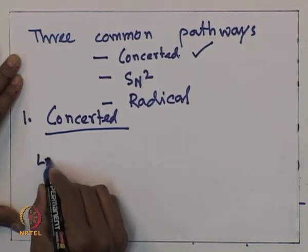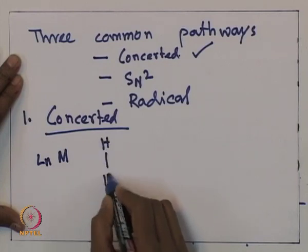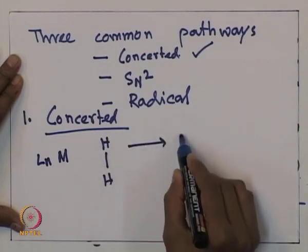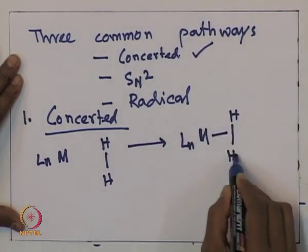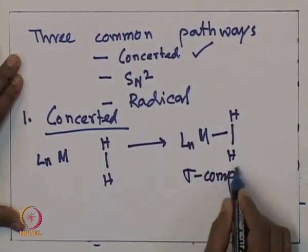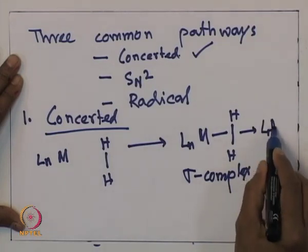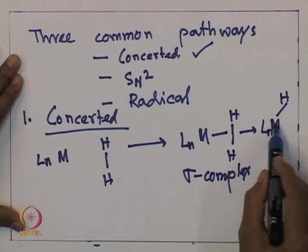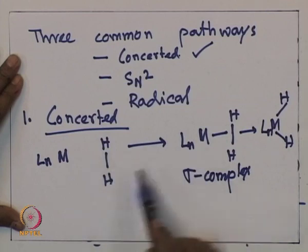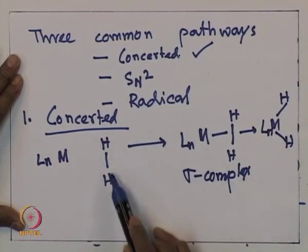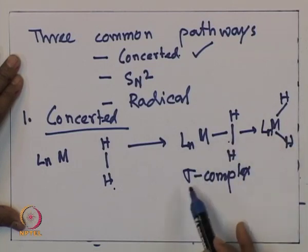Taking a generic example: LₙM reacting with hydrogen will first form a LₙM sigma complex with hydrogen as an intermediate, and finally give LₙM(H)(H). So oxidative addition into hydrogen is happening — the bond between the two hydrogen atoms is broken in the final complex, and the intermediate is a sigma complex.